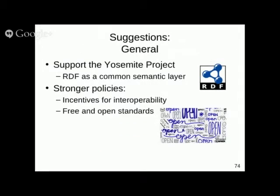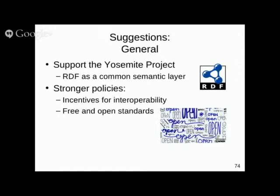Stepping up to general suggestions: one obvious suggestion is to support the Yosemite Project, which addresses a very specific slice of the overall interoperability problem. It would be very good if the ONC recognized RDF as a common semantic layer — a universal information representation. I would strongly encourage the ONC to do more on stronger policies, incentives for interoperability, reducing barriers to interoperability, and encouraging the use of free and open standards in healthcare.